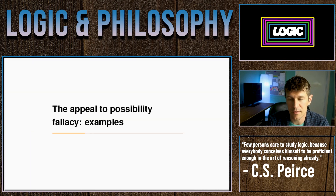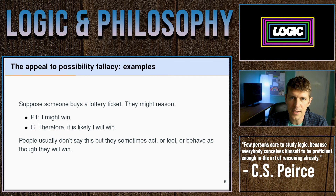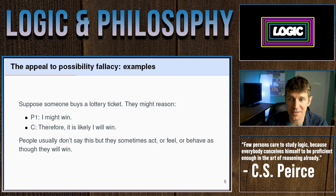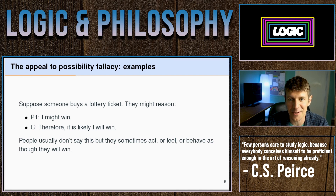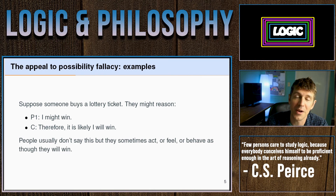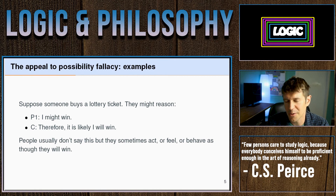Let's look at some examples. These will be pretty basic, but we'll look at more everyday examples later. First example: let's say someone buys a lottery ticket and reasons, 'I might win,' then concludes, 'It is likely I will win the lottery.' People usually don't say this explicitly because they'd realize how silly it sounds, but sometimes they act, feel, or behave as though they commit this fallacy — thinking about what they'll purchase with their winnings, or subtly shifting their behavior as though there's a good probability they will win.